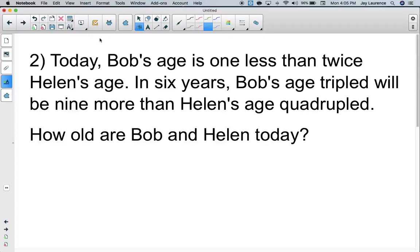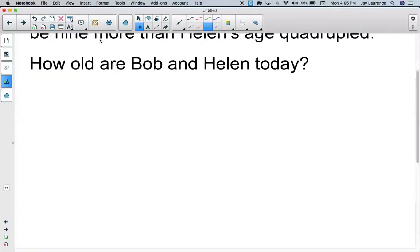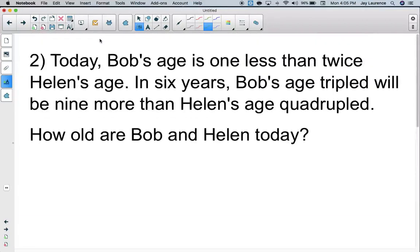Let's move on to problem number two. Today, Bob's age is one less than twice Helen's age. In six years, Bob's age tripled will be nine more than Helen's age quadrupled. Quadruple means to multiply by four. Why don't you try it on your own? Pause the video. See if you can define your variables and write your system. If you can write your system, then these are okay.